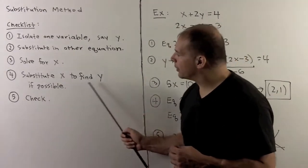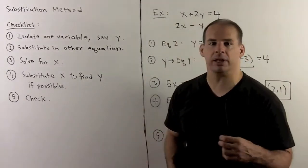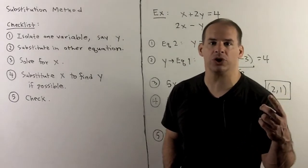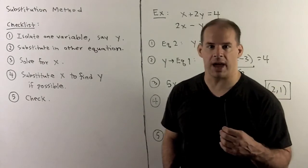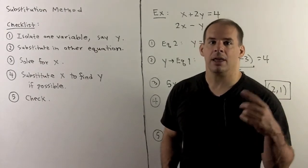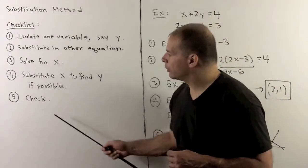At this point, we come up against the three possibilities. Either we have a unique solution, no solution, or infinitely many solutions. We'll consider those in examples. Then, if we have a unique solution, we check.